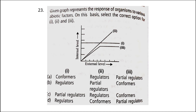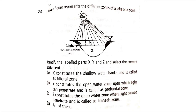Next: the given graph represents the response of organisms to various abiotic factors. On this basis, select the correct option for 1, 2, and 3 — the correct answer is option D. Next: the given figure represents different zones of a lake or pond. Identify the labeled parts X, Y, and Z and select the correct statement. The correct statement is option A. X constitutes the shallow water banks and is called the littoral zone. Y is the limnetic or photic zone — open water zone up to the depth to which light can penetrate. Z is the profundal zone — deep water zone where light does not penetrate.